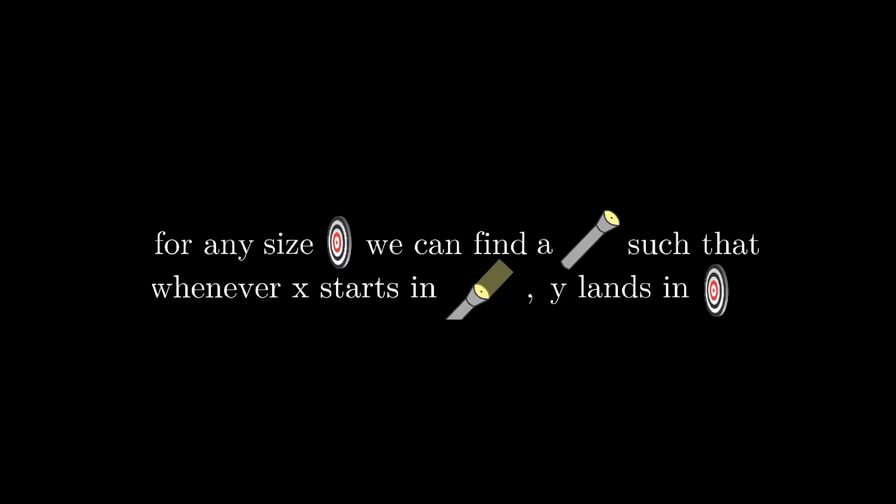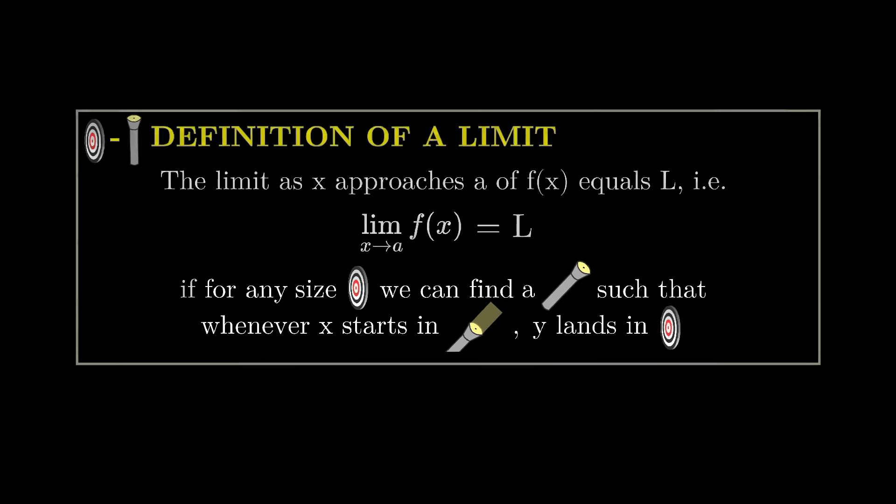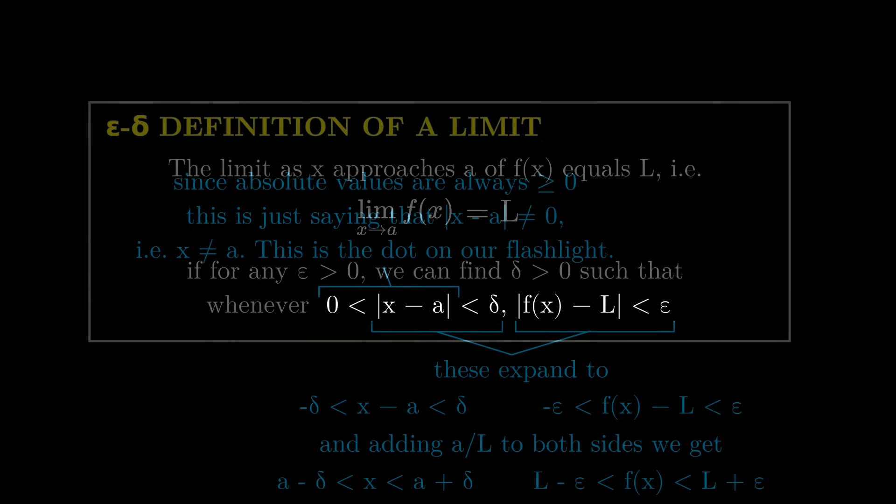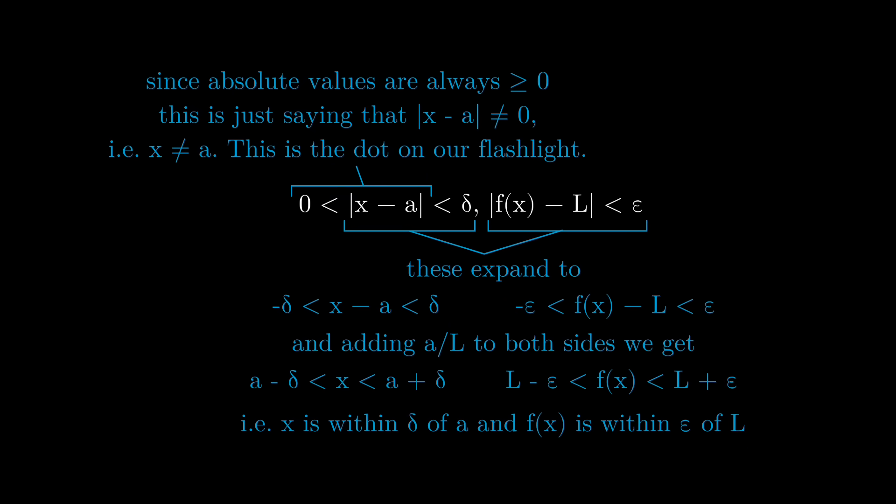So the rigorous definition of a limit is that for any size of target on the y-axis, we can find a size of dotted flashlight small enough so that if x starts within the beam of the flashlight, y ends up inside of the target. You might call this the target flashlight definition of the limit. But since Greek letters give it that formal math vibe, it's traditional to call the radius of the target epsilon and the radius of the flashlight delta. The condition that we start within the beam of the flashlight then looks like this. And the condition that we end up within the target looks like this. I'll put a little extra explanation up on the screen in case you want to pause and think about it for a second.